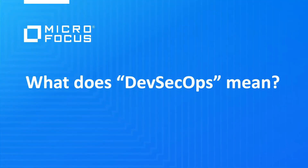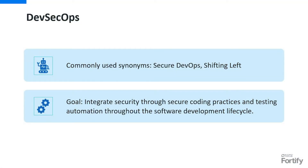Stan, our topic today is DevSecOps. For those that haven't heard the term before, what does it really mean? Well, DevSecOps is an extension of DevOps and is sometimes referred to as Secure DevOps. The goal of DevSecOps is to make security part of the software development workflow, with secure coding best practices and testing automation, rather than bolting it on at the end of the lifecycle.